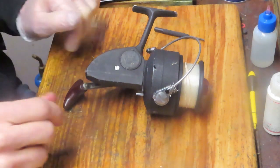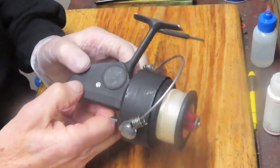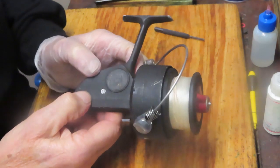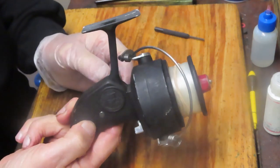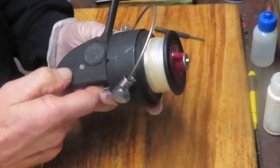Hi, this is Dennis with Second Chance Tackle. Today I have the opportunity to work on an older one. This is the Dam Quick 440N. It's an older reel, still got a lot going for it.